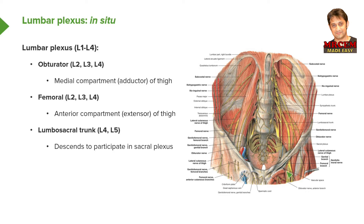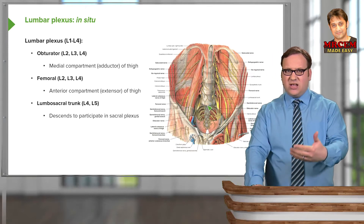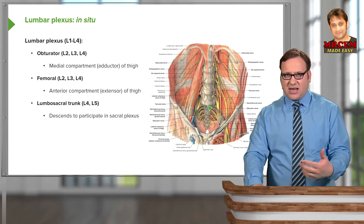The lumbosacral trunk is coming from L4 and L5, and this is important as it descends down to form the sacral plexus. We can see the lumbosacral trunk running down into the sacral plexus, taking information from the lumbar region down into the sacral plexus — providing the communication between the lumbar plexus and the sacral plexus.